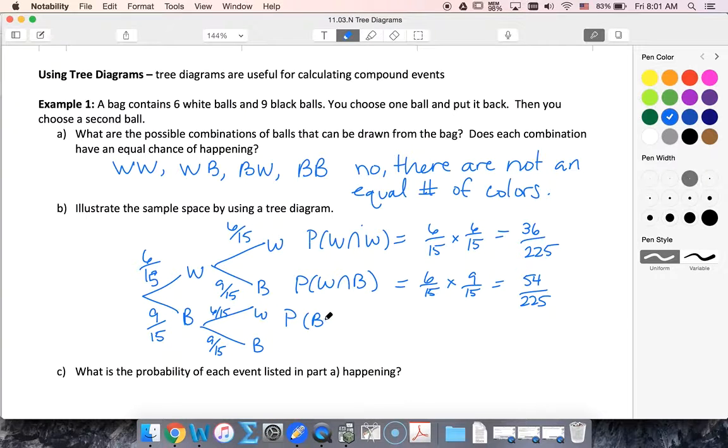Probability of black and white, well the probability of black is nine out of fifteen, probability of white is six out of fifteen. Again, fifty-four out of two twenty-five and those are the same because our events are independent.